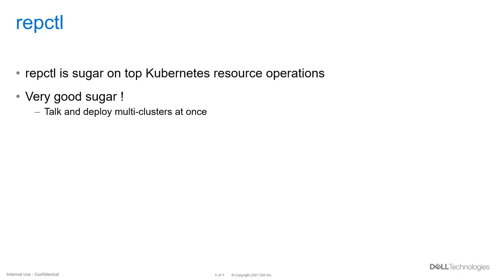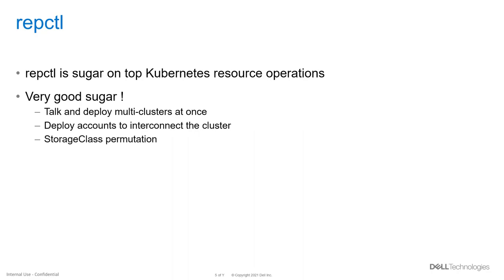With RepCTL, you can deploy and talk to multiple clusters at once. It helps interconnect all different clusters so they are able to communicate with each other. In case of different clusters, we need the replication controller to forward events — like PV creation — to distant clusters, and RepCTL makes deploying the necessary connectors much easier. It also helps with storage class creation: for two distant clusters connected to two different arrays, the configuration of the storage class on site B is essentially a permutation of IDs from site A, and RepCTL makes that much easier.